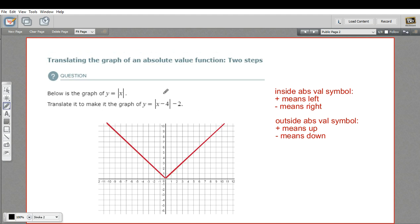So we need to go right four spaces. And then if there's a number outside the absolute value symbol, positive means up and negative means down. So we need to go down two spaces.